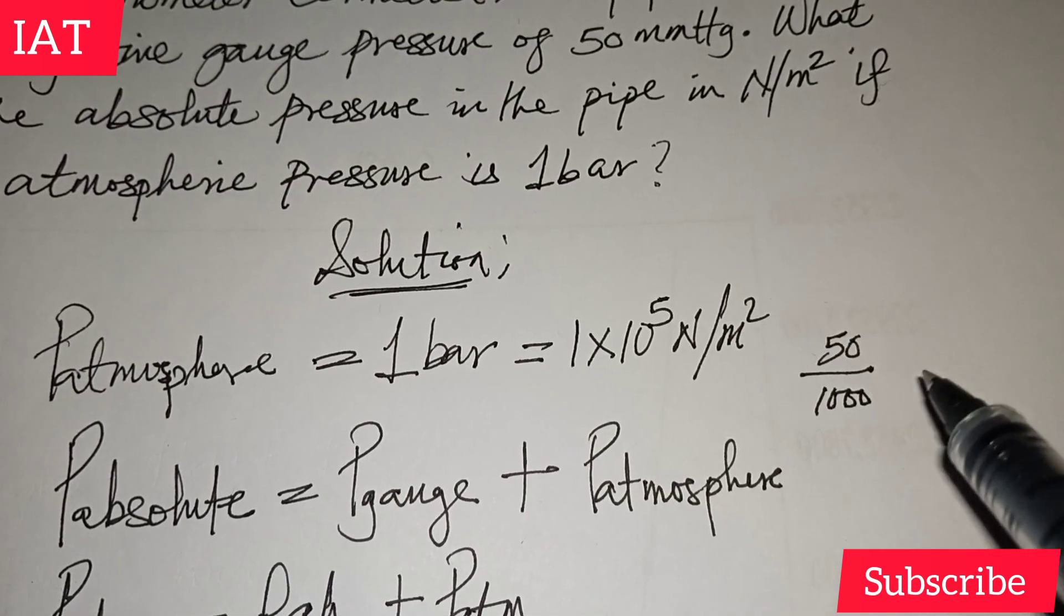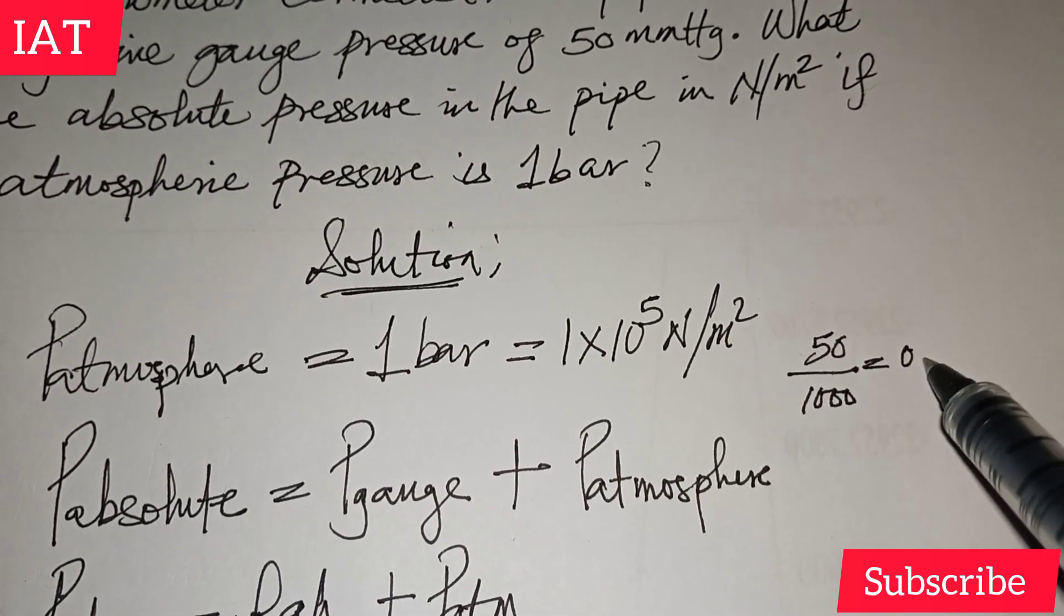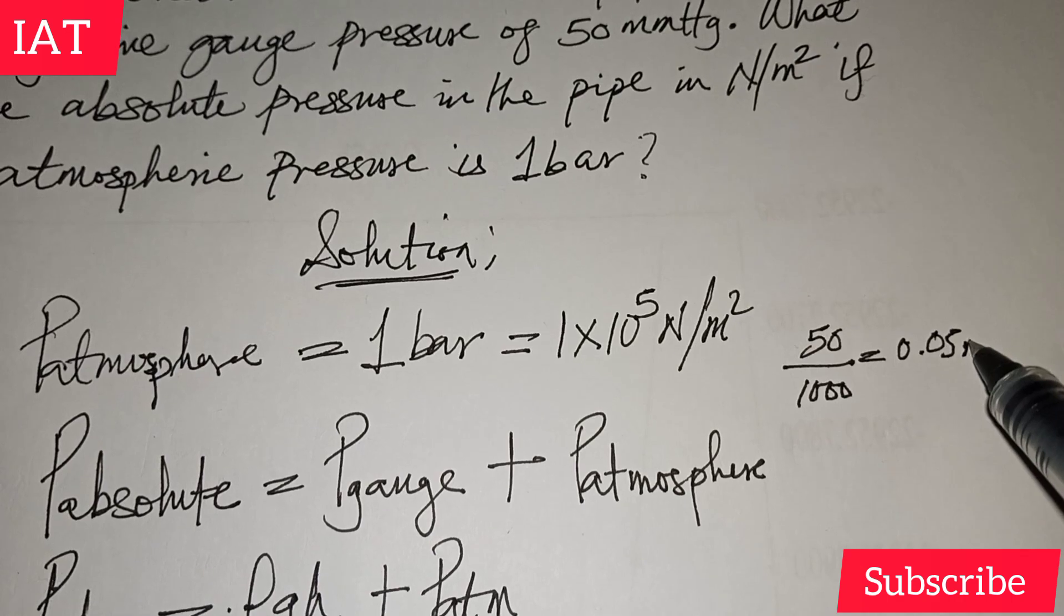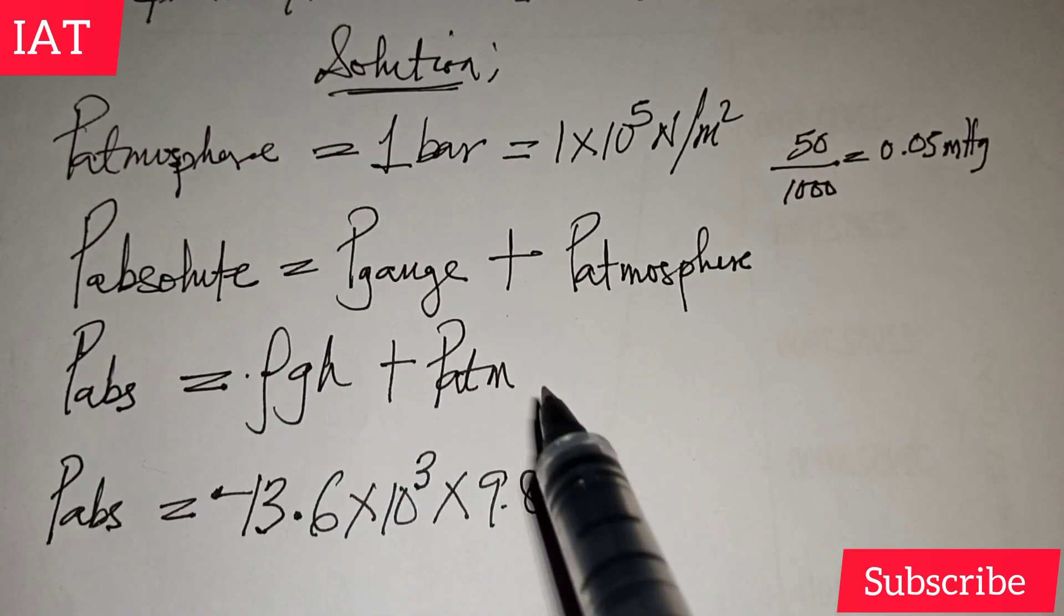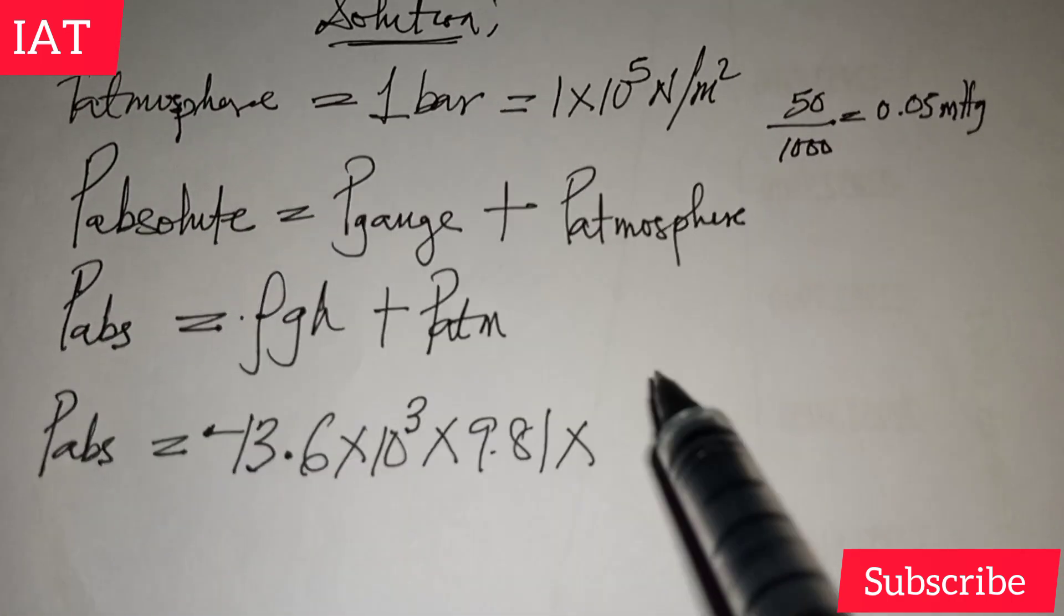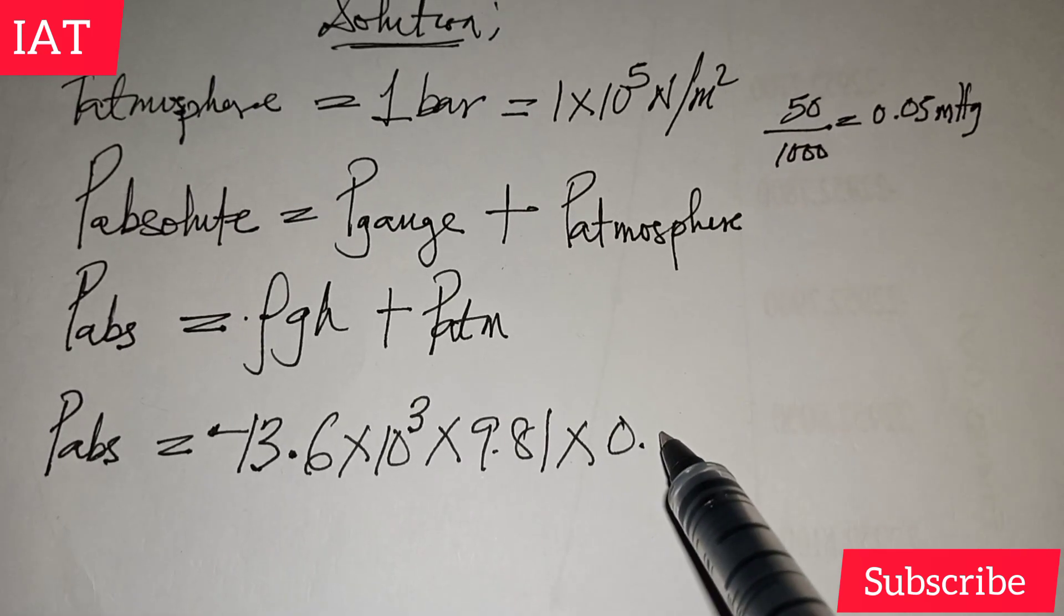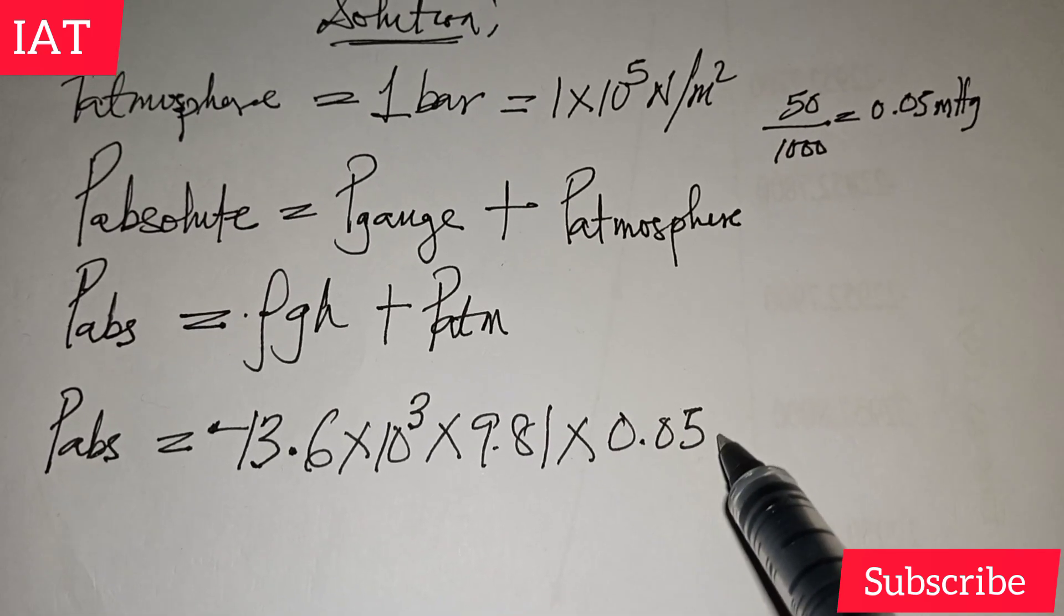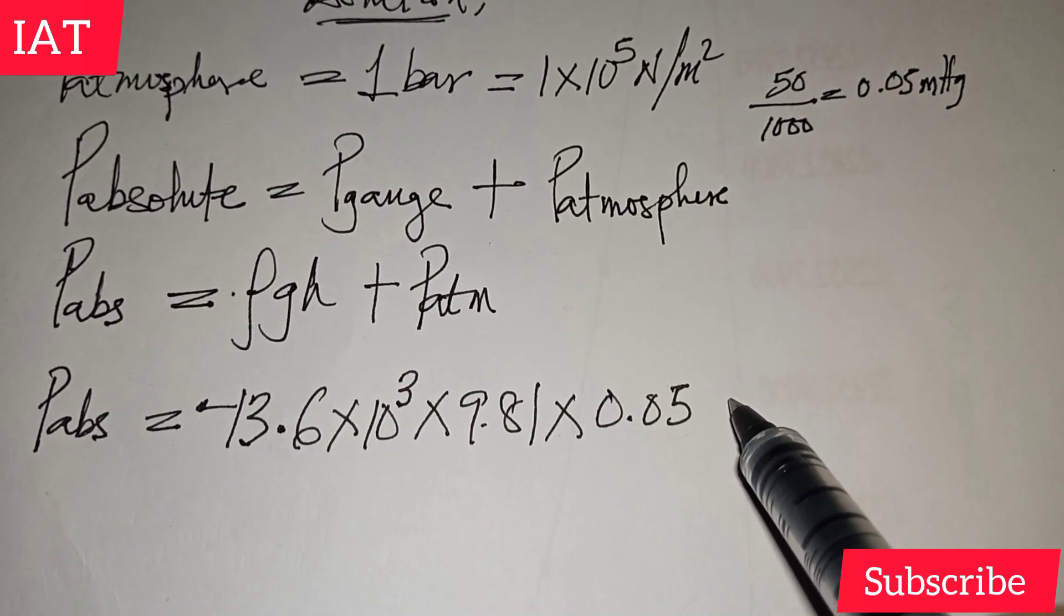By the time you have 50 millimeter, milli is 10^-3, which is the same thing as dividing by 1000, and this will give you 0.05 meter mercury.